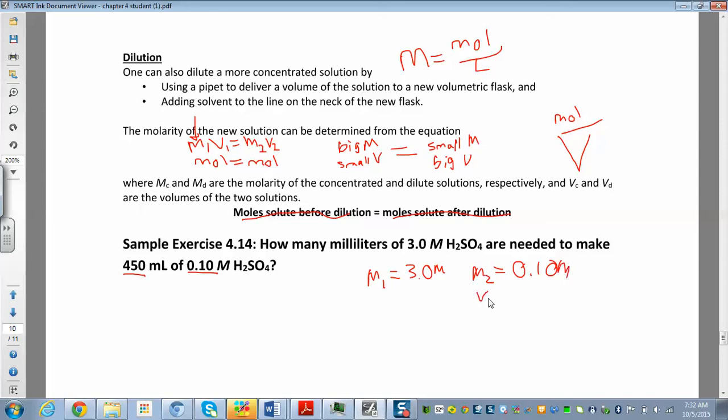Our volume here is 450 milliliters, and what we're looking for is our first volume. How many milliliters of 3 molar, so how many mL of your concentrated solution do you need to add in order to make a 0.1 molar concentration that's 450 mL? Since we're looking for milliliters, it's okay to keep this in milliliters. We don't have to convert to liters. If this is in milliliters, this is going to be in milliliters.